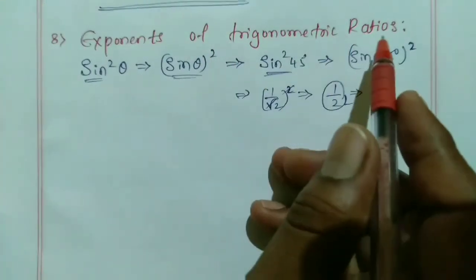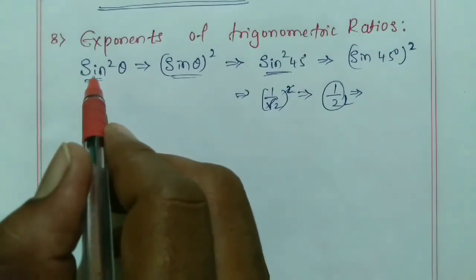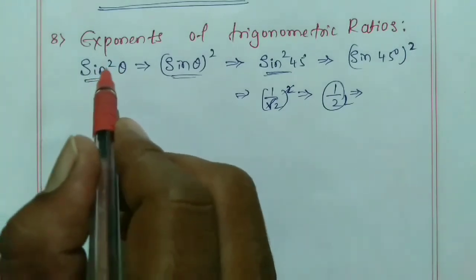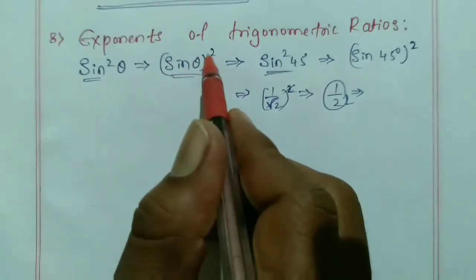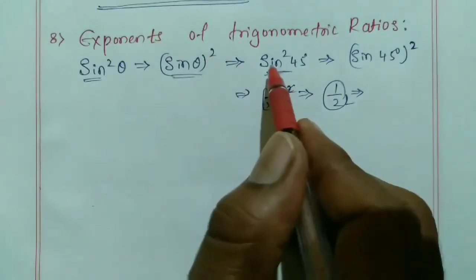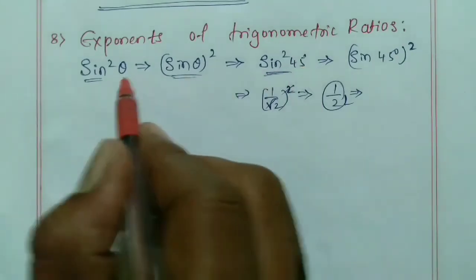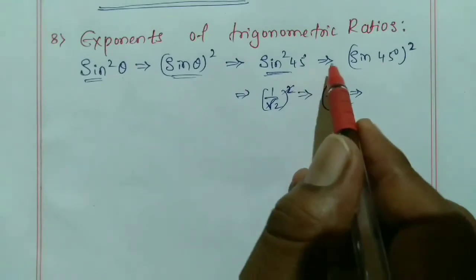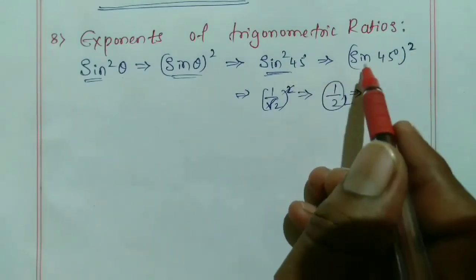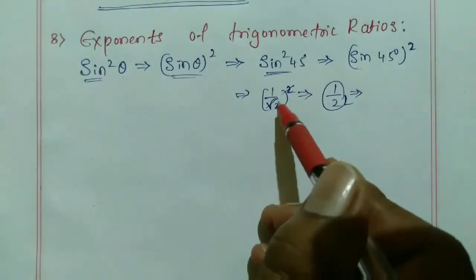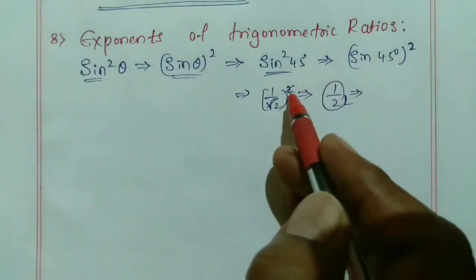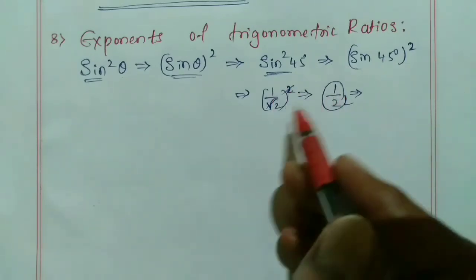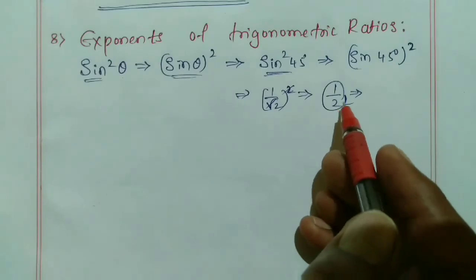For exponents of trigonometric ratios: sin²θ means (sin θ)². For example, sin²45° means (sin 45°)². Since sin 45° = 1/√2, we get (1/√2)² = 1/2. The numerator 1² = 1 and (√2)² = 2, so the answer is 1/2.